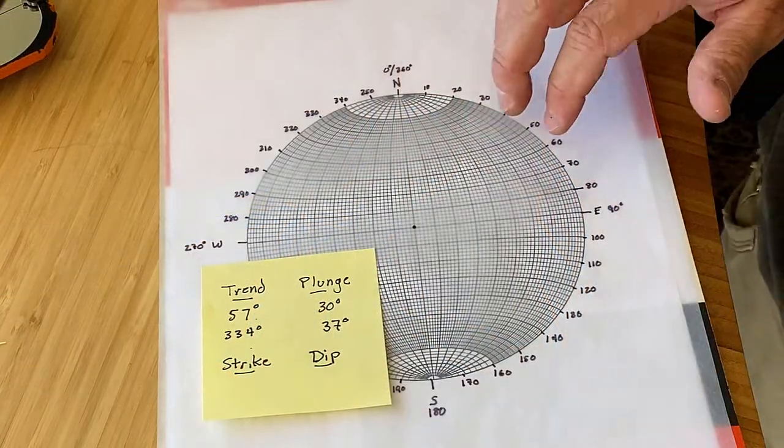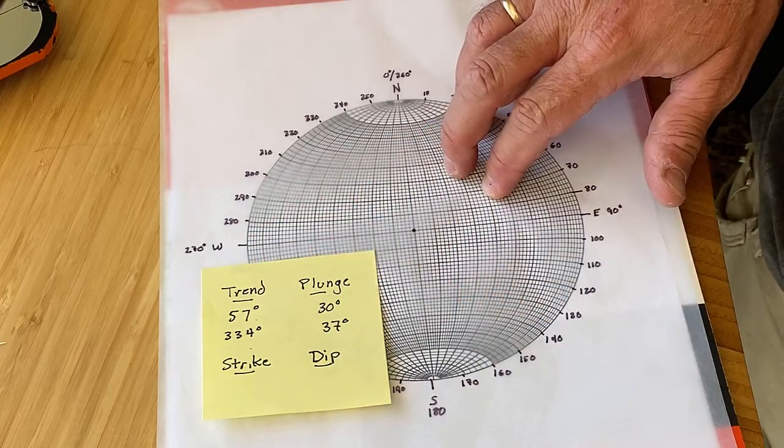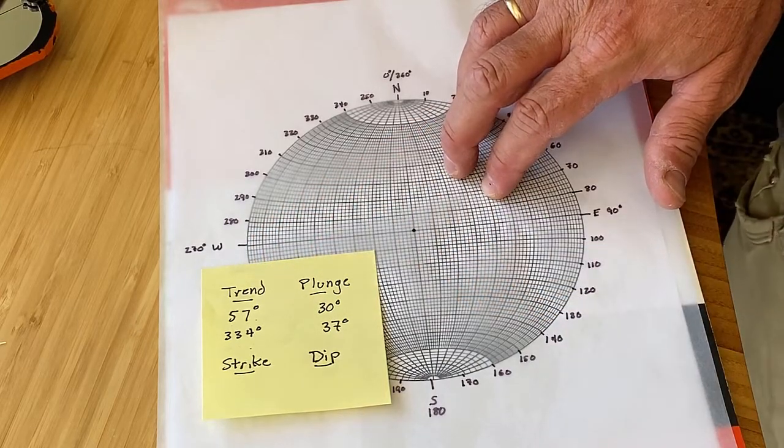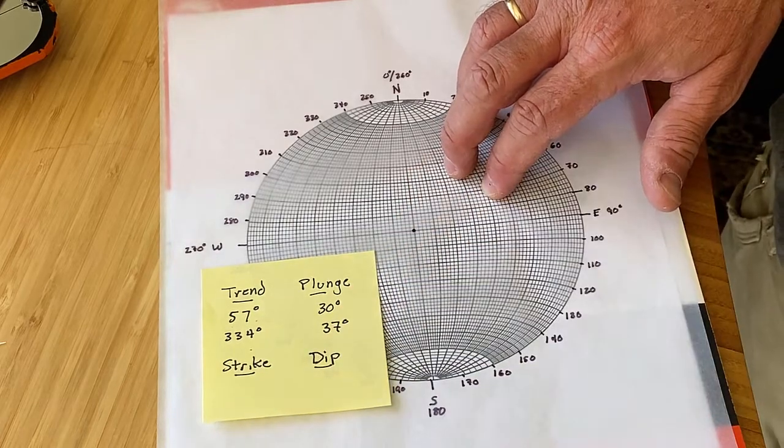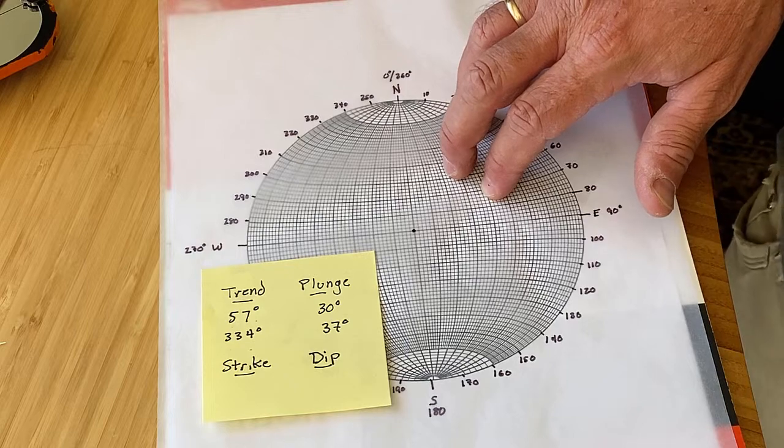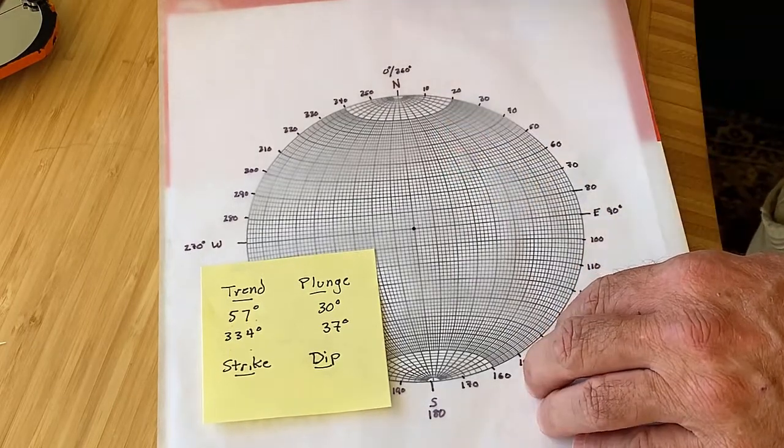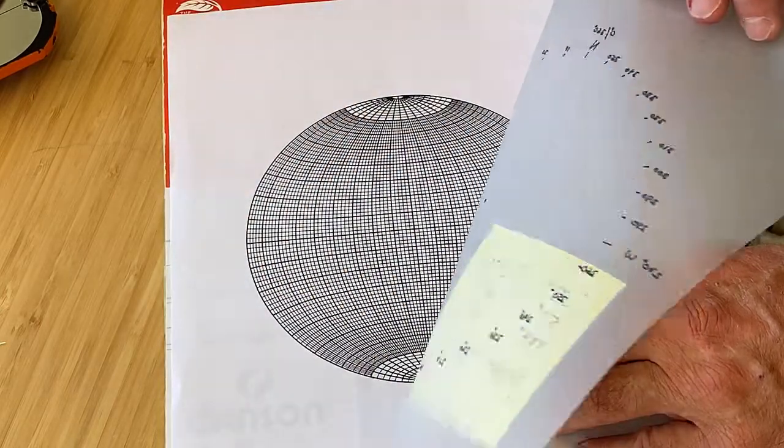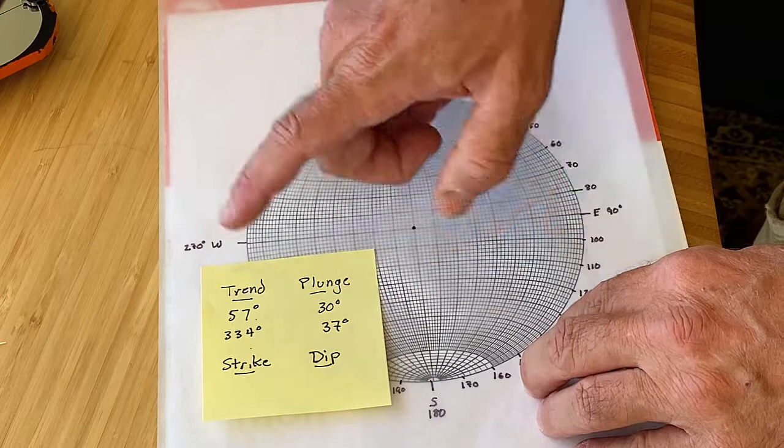Okay, hi everybody, we're back again. So we're going to use a stereo net to take these two measurements of trend and plunge and figure out what the true strike and dip is of the plane in which both of those trend and plunge measurements occur. What I've done is I have marked—there's my stereo net there—I've taken a piece of tissue paper and I've marked the various angles from north.